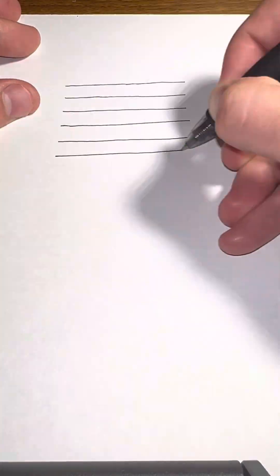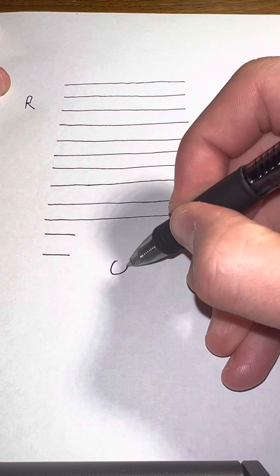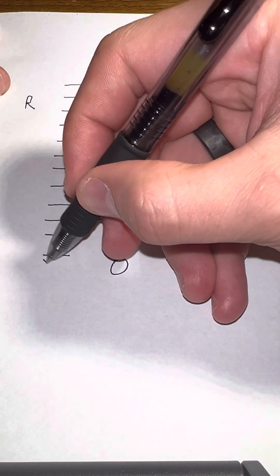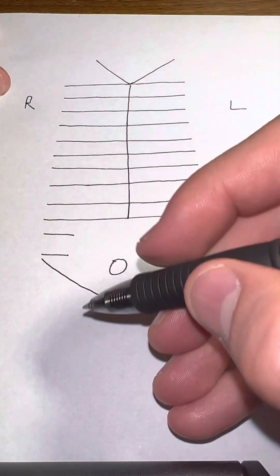Alright, so step one, you're going to want to draw 10 lines. So we have our 10 lines, then we're going to draw the ribs on each side. This is the left, this is the right. Then next, we're going to want to draw the bladder, then the pelvis. Draw two legs as well.